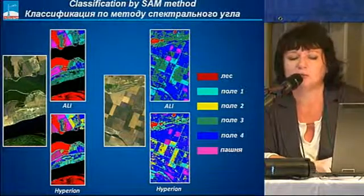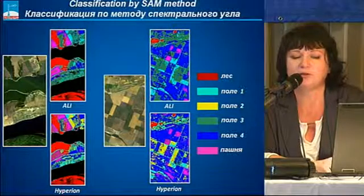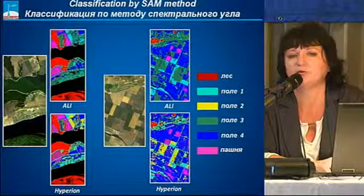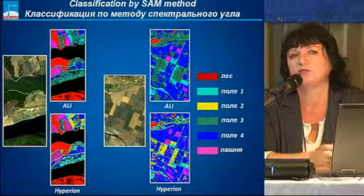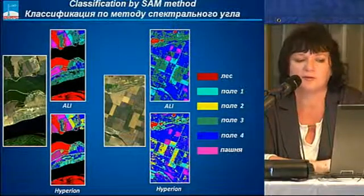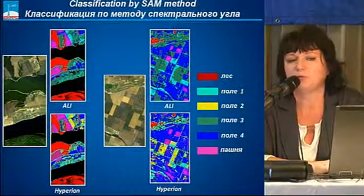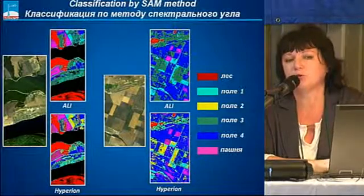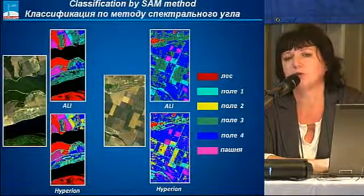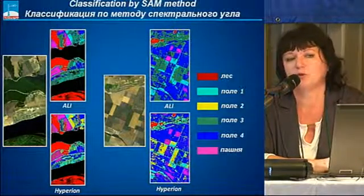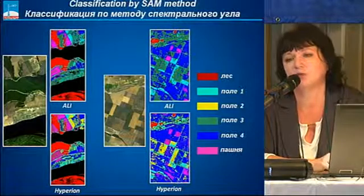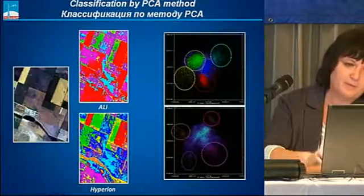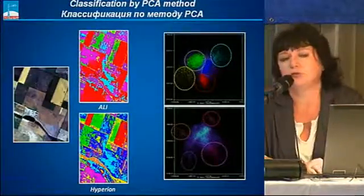The next method is classification by the SAM method. You can see the forest and several types of forest cover — some with ripe cereals, others with early yields. In hyperspectrum we can identify a larger number of classes, whereas in multi-spectrum they are all merged.